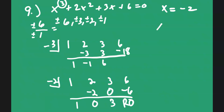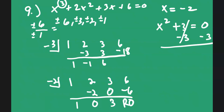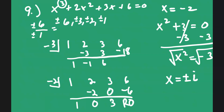We have x squared plus 3 equals 0. Subtract 3 from both sides: x squared equals negative 3. Take the square root of both sides. Since we have the square root of a negative number, x equals plus or minus i times square root of 3. So the solutions are x equals negative 2, x equals i√3, and x equals negative i√3.